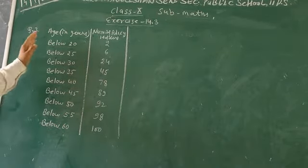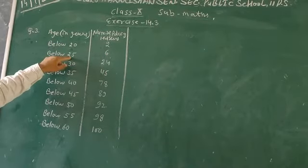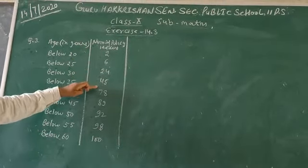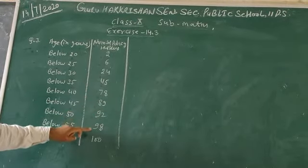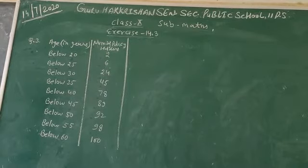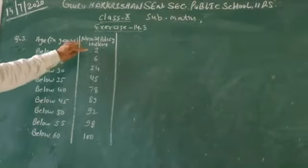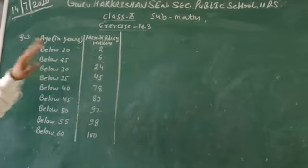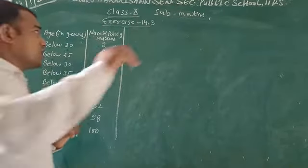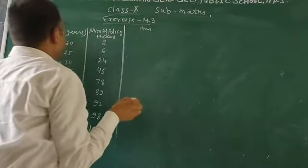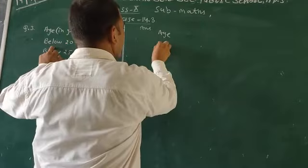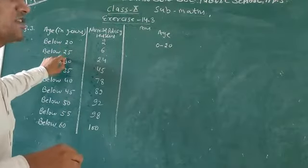This frequency table we have given in cumulative form. Below 20, below 25 is given, and the number of policies ordered is 2, 6, 24, 45, 78, 89, 92, 98, 100. So in question 1, below 20 means age is 0 to 20.